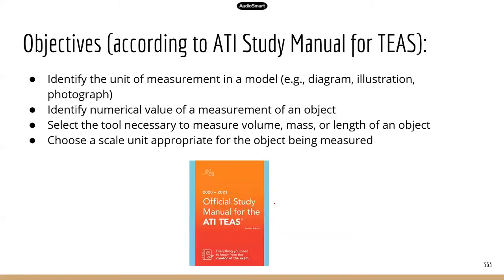Here are the objectives from the ATI. You need to be able to identify the unit of measurement in the model — for example, there might be a diagram, illustration, or photograph given to you and you need to identify the unit of measurement. You also need to be able to identify the numerical value of a measurement of an object, and I will have some practice problems on that.